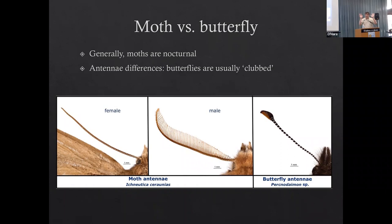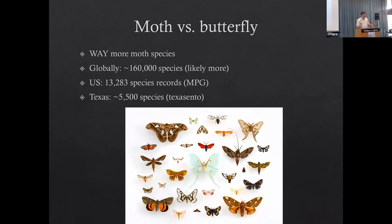One of the reasons males have more filaments is they use those antennae to smell - specifically to smell the pheromones of the females. As we look at some of our moths in a second, you'll be able to tell the difference between a boy and a girl moth. There are a lot more moths than butterflies. Globally, around 160,000 species of moths. Here in the United States, we have give or take 13,000 species of moths. And in Texas, this is over 5,000 species of moths.